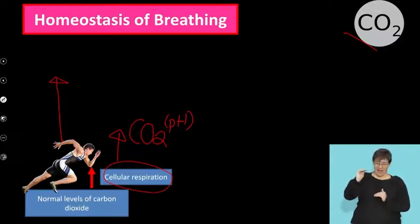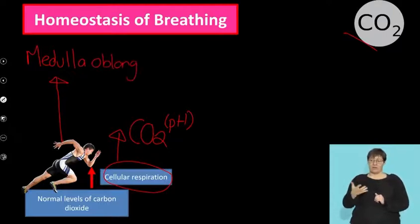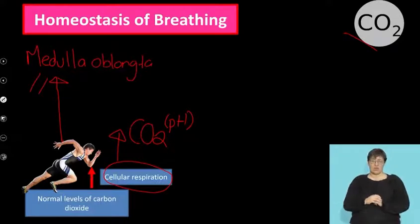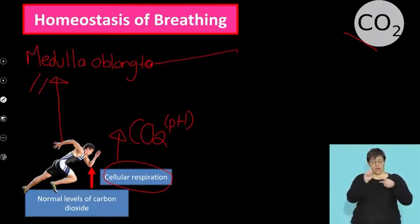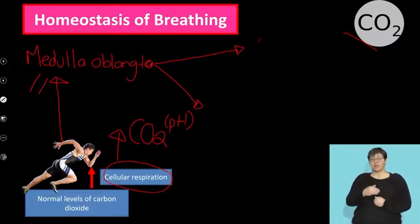When high carbon dioxide levels are in my blood, blood rushes through the brain — specifically an area called the medulla oblongata. It's the brain stem, the very bottom part of my brain. What the medulla oblongata does is send two messages to two organs that it's going to trigger.